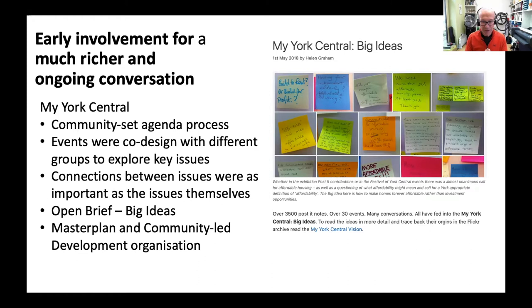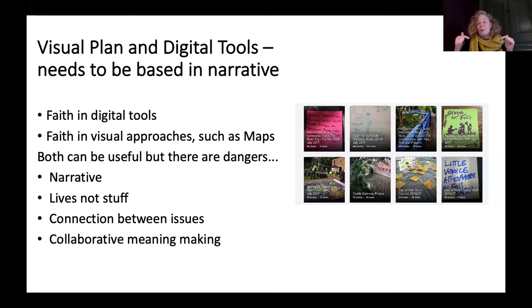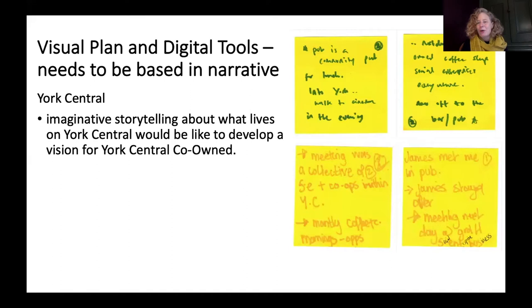There's a lot of faith in the white paper in digital tools and visual approaches such as maps. Both can be useful, but there are dangers. The methods need to deal with the complexity of the issues, and the best way of doing that is through narrative. If images and maps are produced too early they can really constrain people's thinking — maps tend to be about stuff rather than about lives, reducing conversations to shuffling blocks around a map rather than thinking broadly about what matters. Narrative is better at building connections between issues and is closer to people's lived experience of being in place — the city isn't a map, it's living in it. Maps are a design tool which can be useful, and digital tools can help, but it's stories and collaborative meaning-making that make a difference. One quick example is using deep storytelling about 'a day in your life in the future' on York Central to develop a vision with York Central Co-Owned.